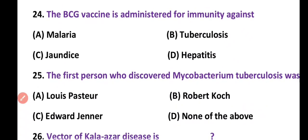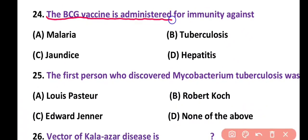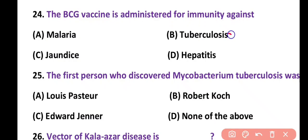Question 24. BCG vaccine is administered for immunity against: malaria, tuberculosis, jaundice, or hepatitis. Correct answer is option B. BCG vaccine is administered against tuberculosis.